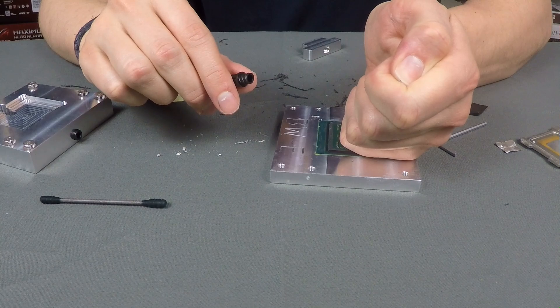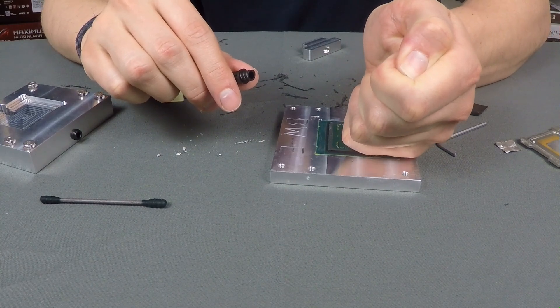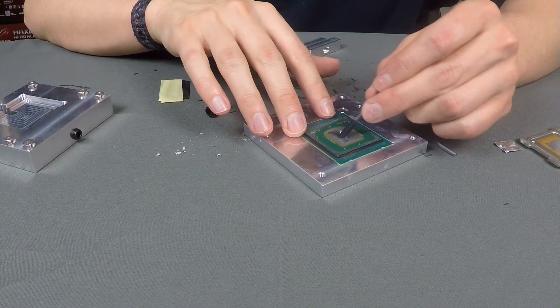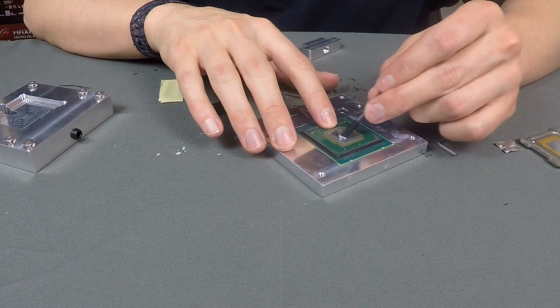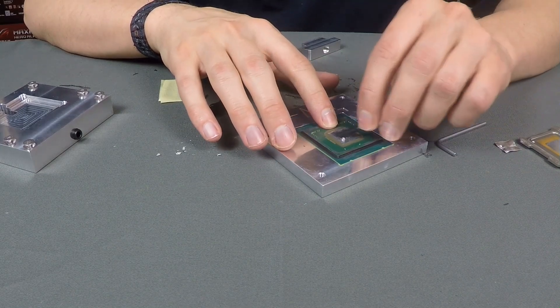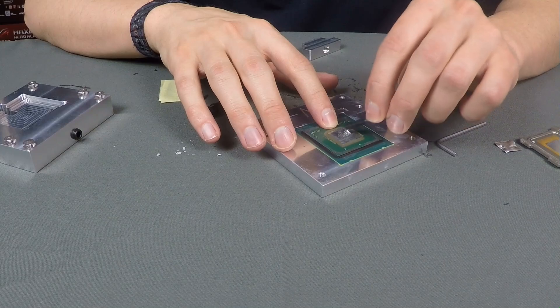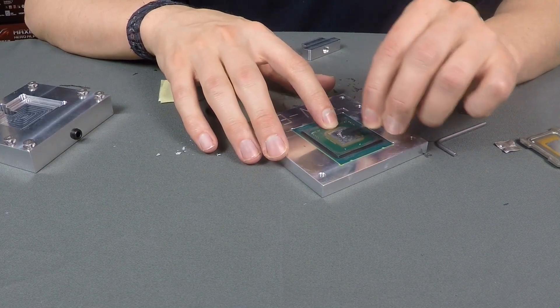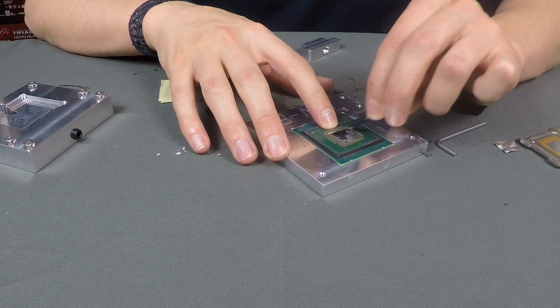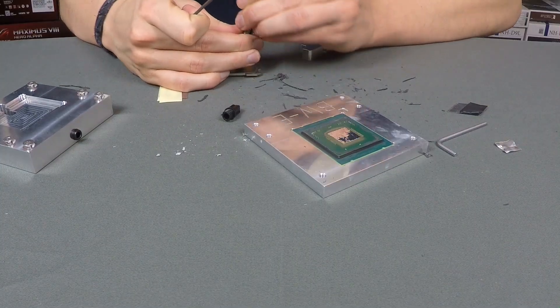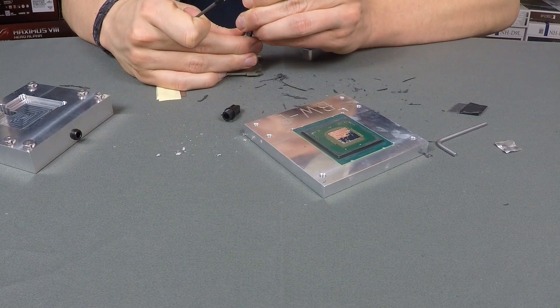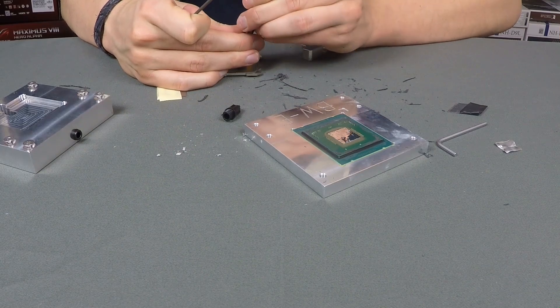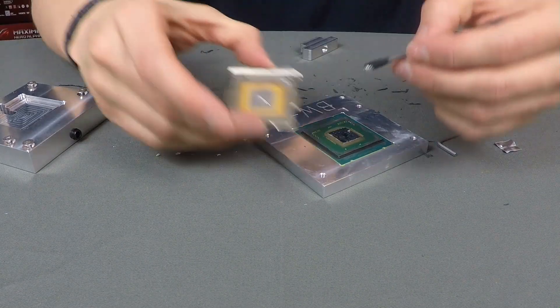Now use the liquid metal. Place the CPU in the socket again just for easier handling, and place a really small drop on the chip. We will spread it with a cotton swab. Then we do basically the same for our IHS again - place a very small drop in the middle of the IHS and spread it again with a cotton swab.